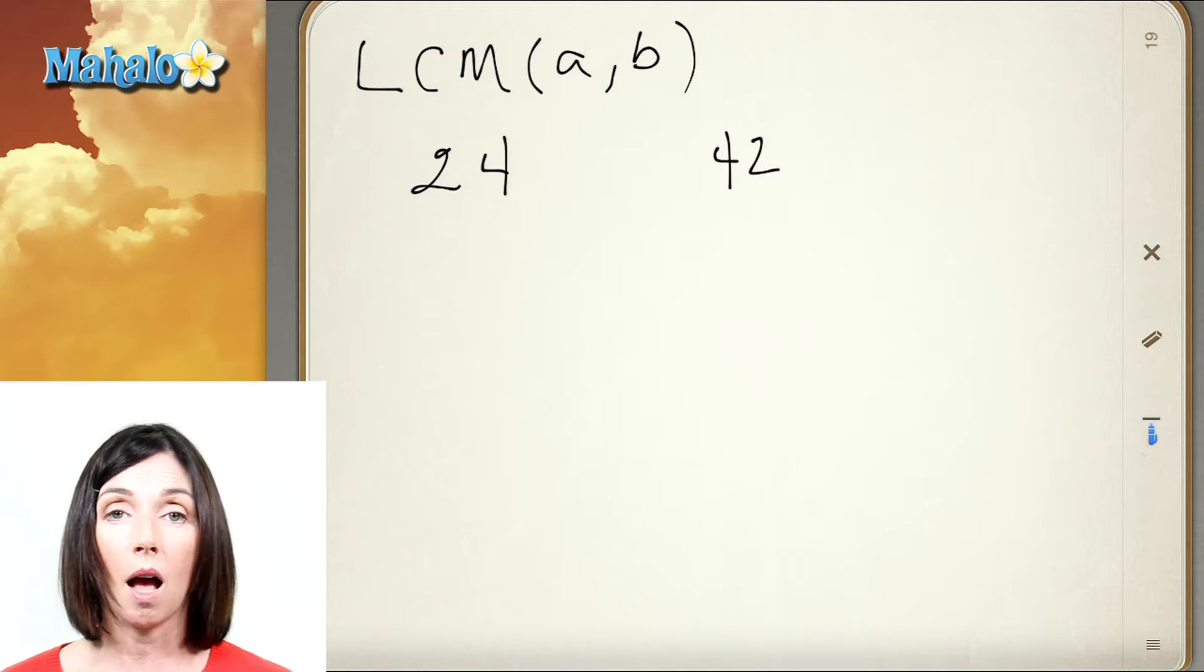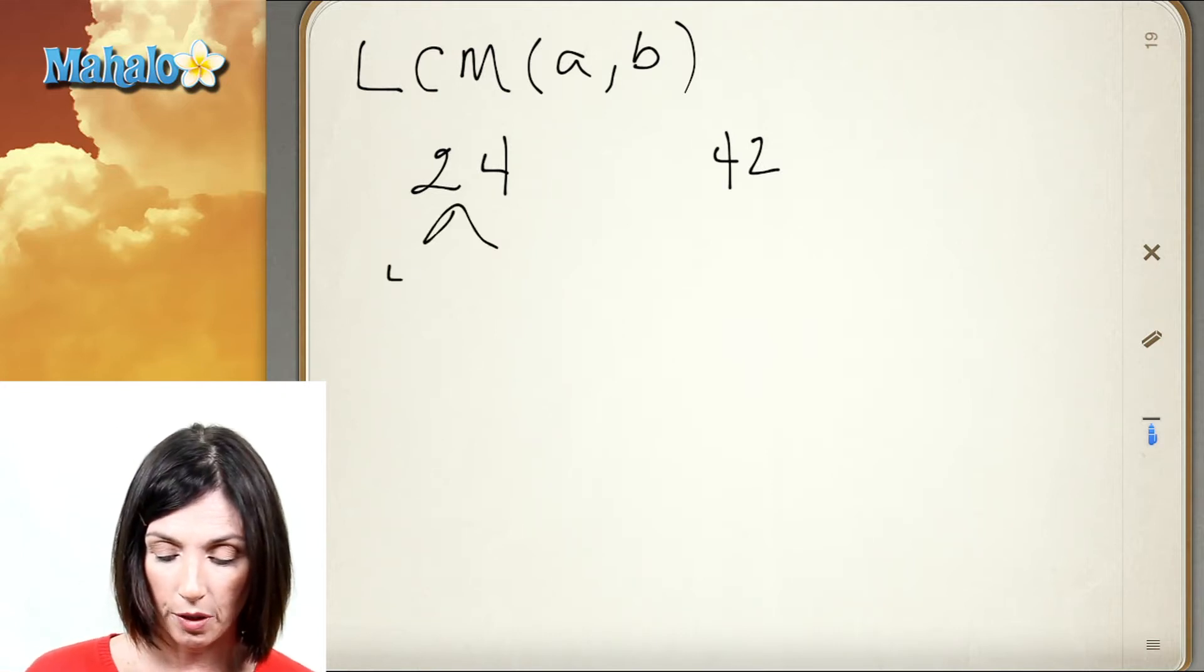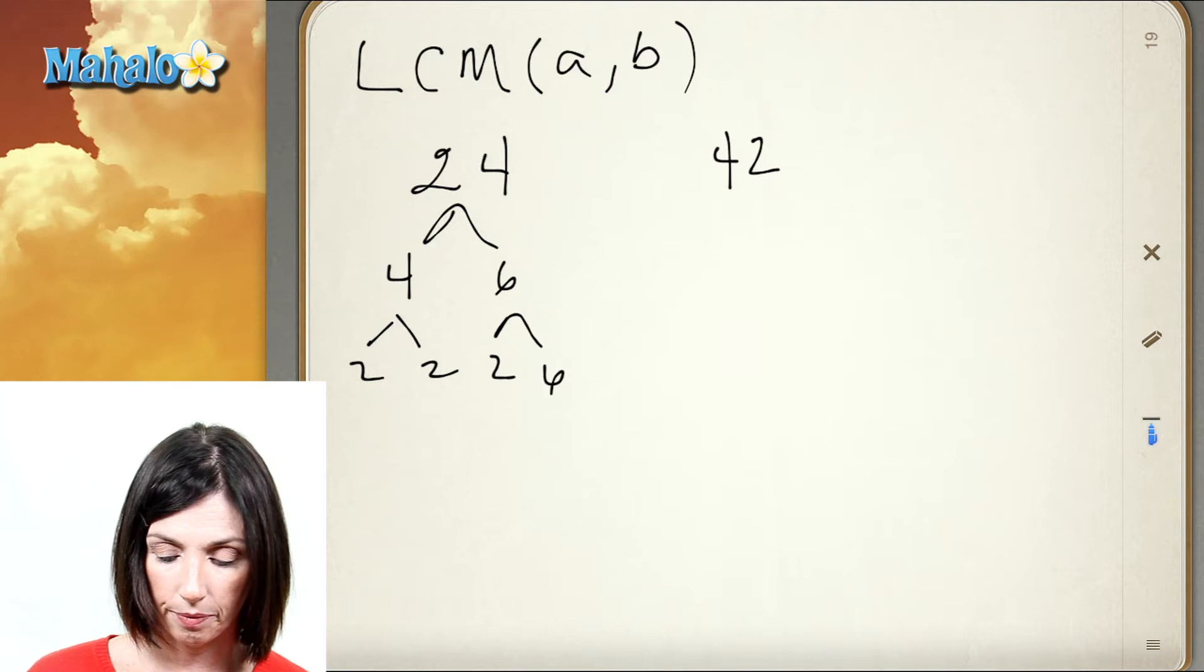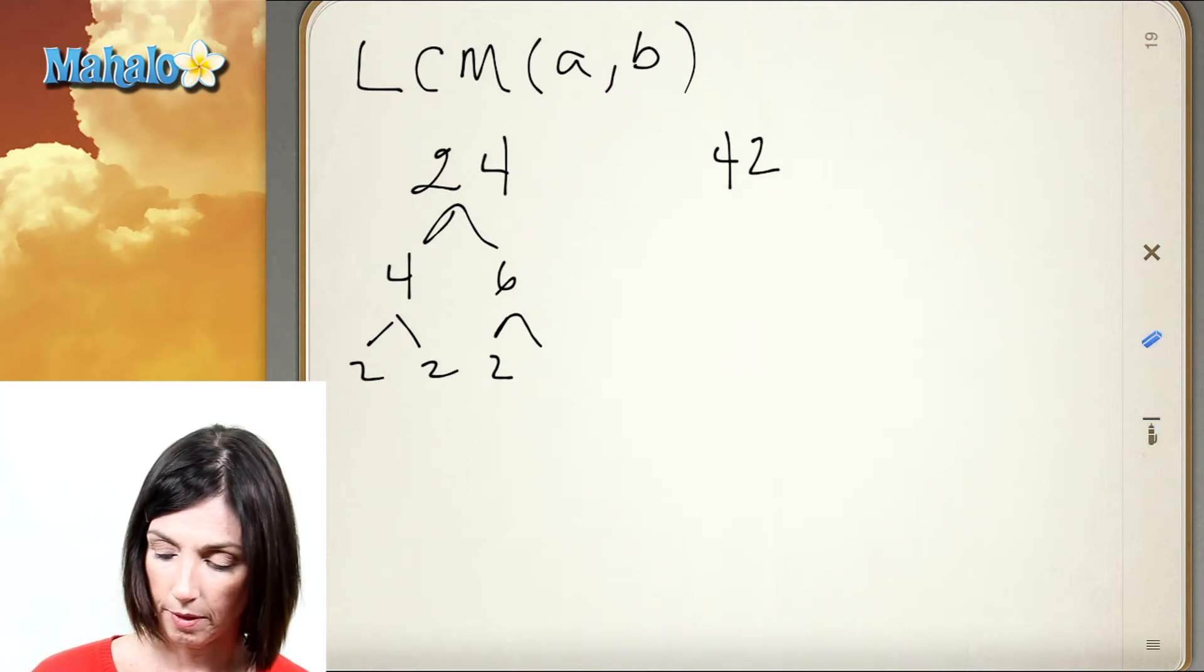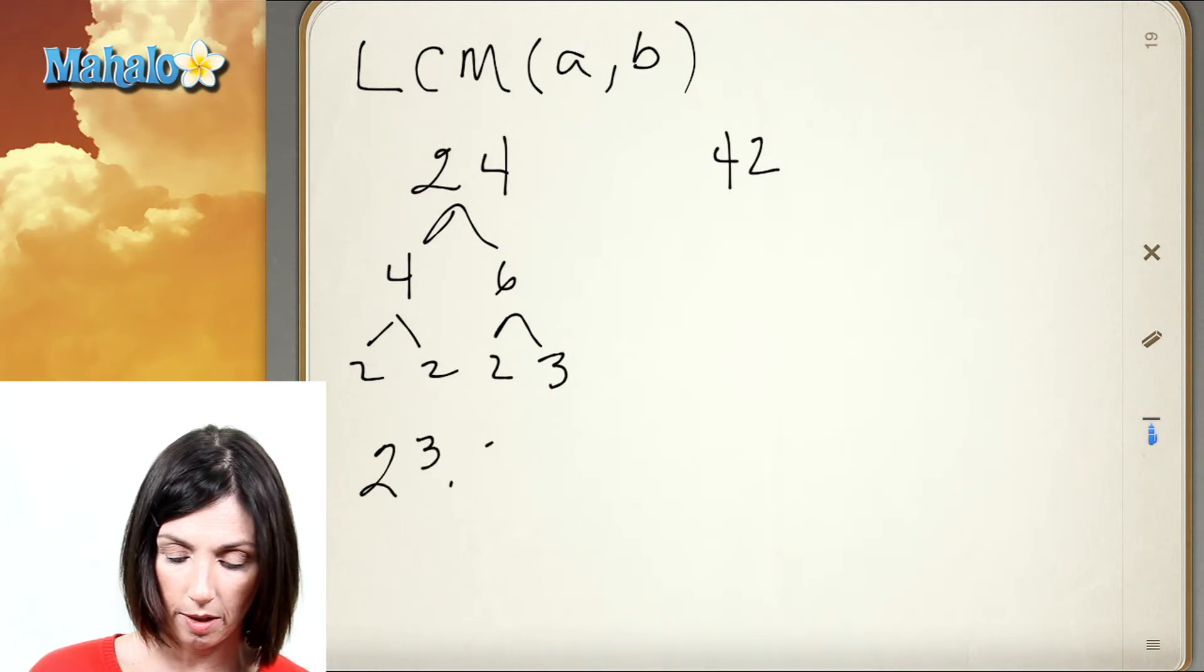You can find the least common multiple using the prime factorization, so let's do that. 24 is 4 times 6, and then we'll factor 4 as 2 times 2 and 6 as 2 times 3. Okay, so that means that we've got 2 cubed times 3 here.